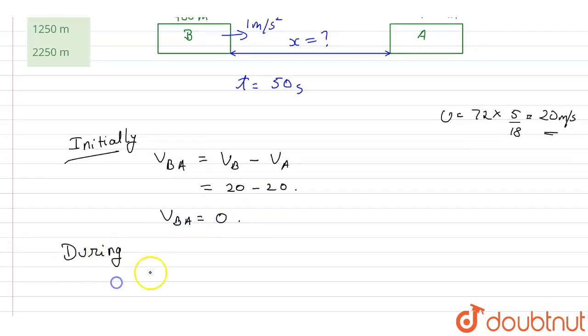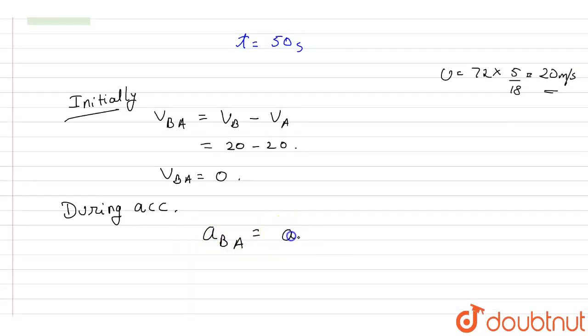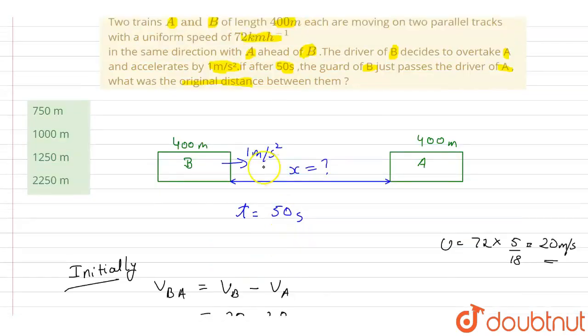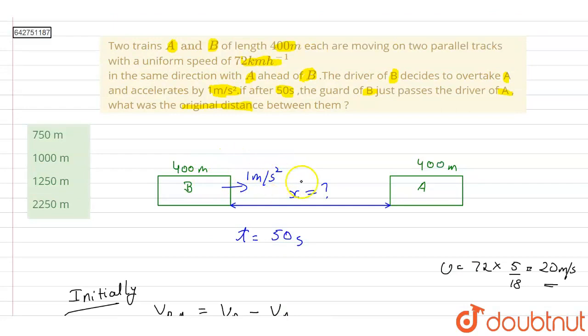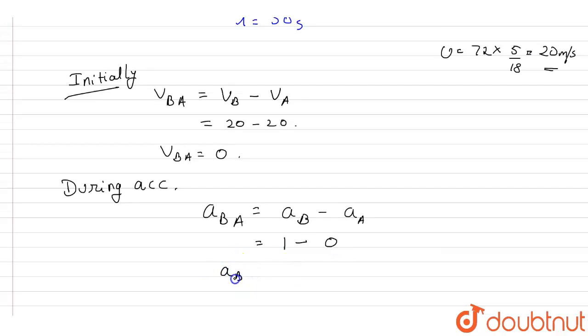Now similarly, during acceleration, the relative acceleration of B with respect to A will be given as acceleration of B minus acceleration of A. Now acceleration of B is 1 meter per second squared, but train A is moving with a constant velocity, that means this will be 1 minus 0, so aBA will be equal to 1 meter per second squared.